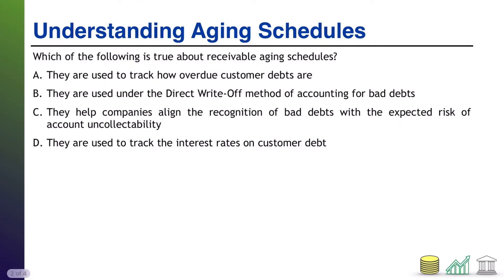First up: understanding aging schedules. Which of the following is true about receivable aging schedules? There are four options — one could be right, more than one could be right. See if you can identify the true ones. Pause the video, and when you're ready, come on back and I'll walk through the solution.